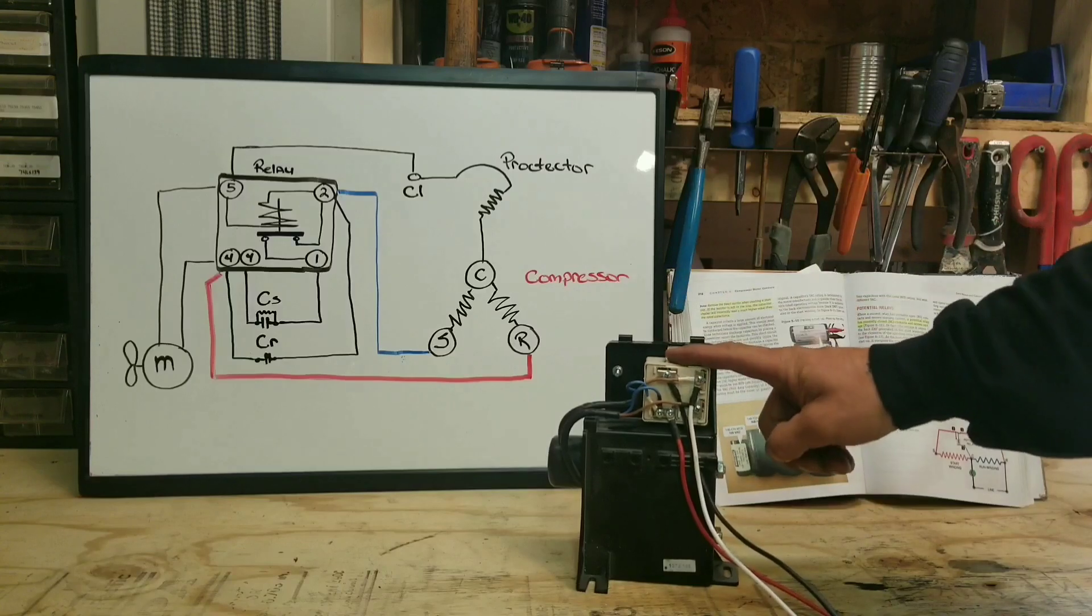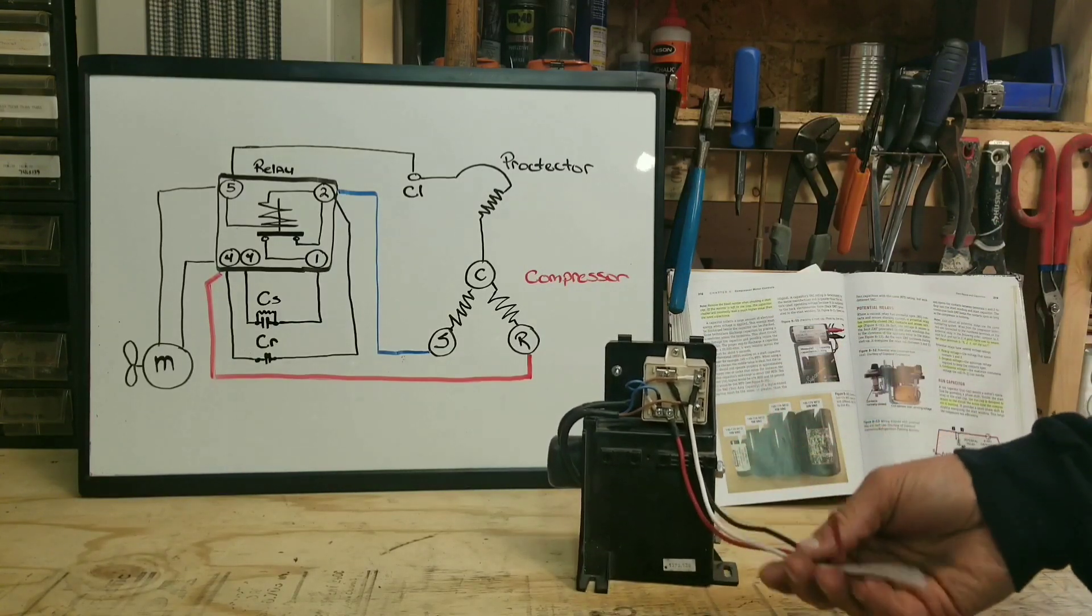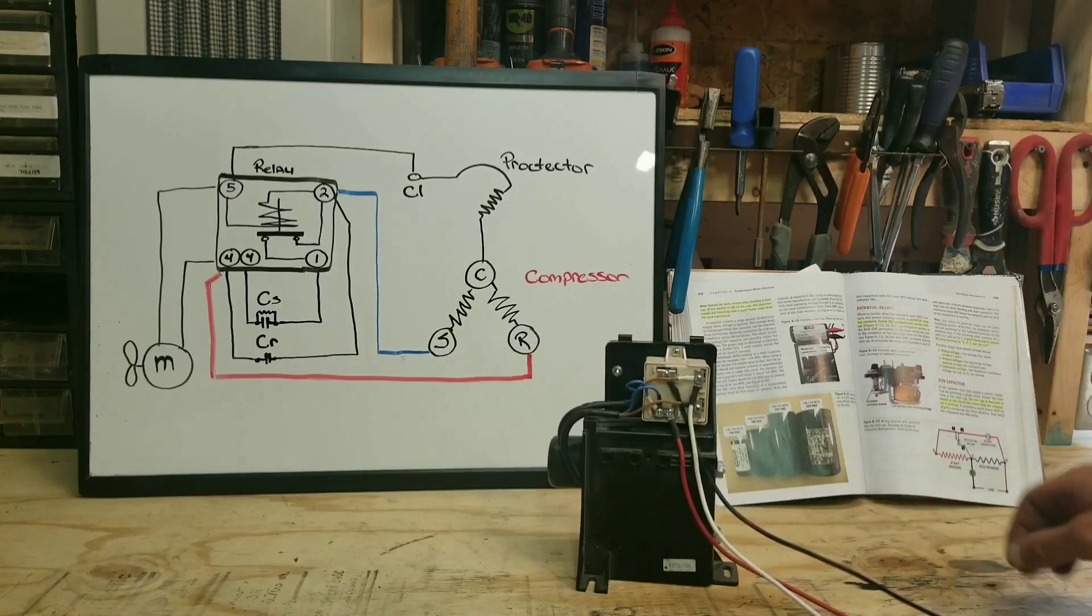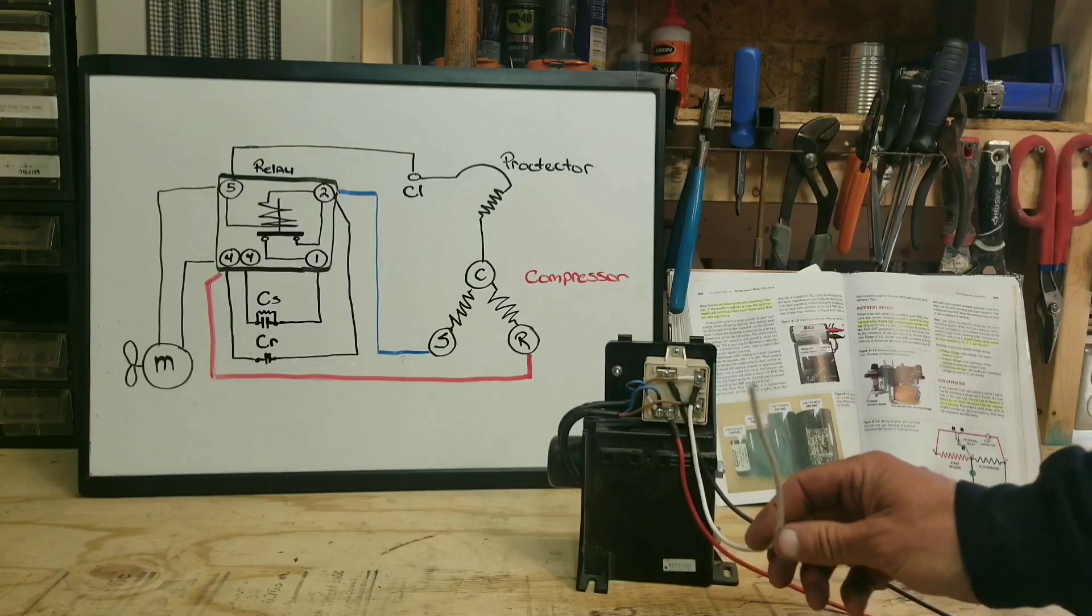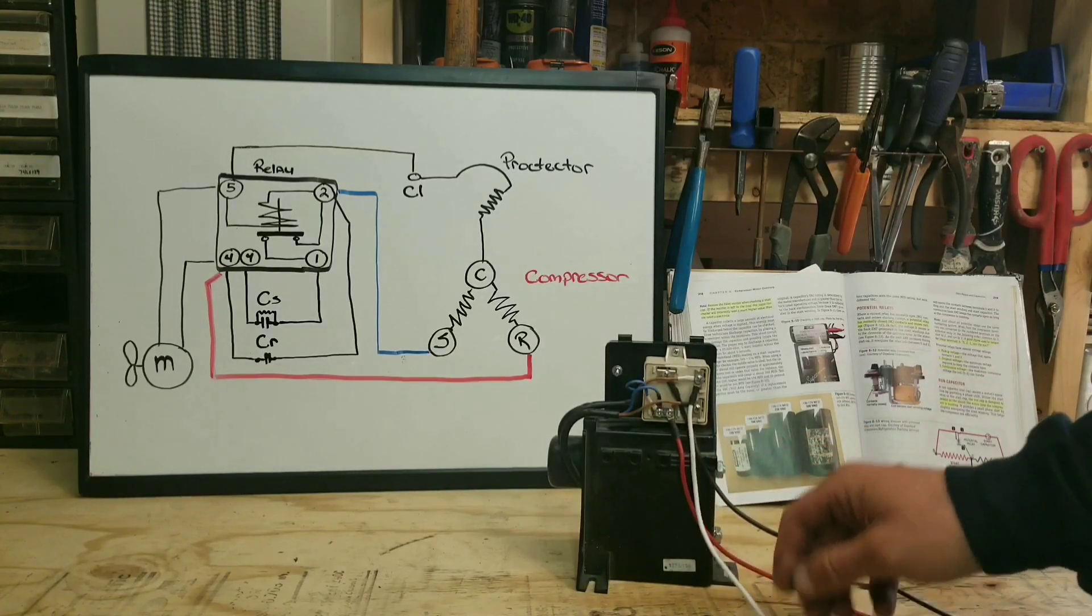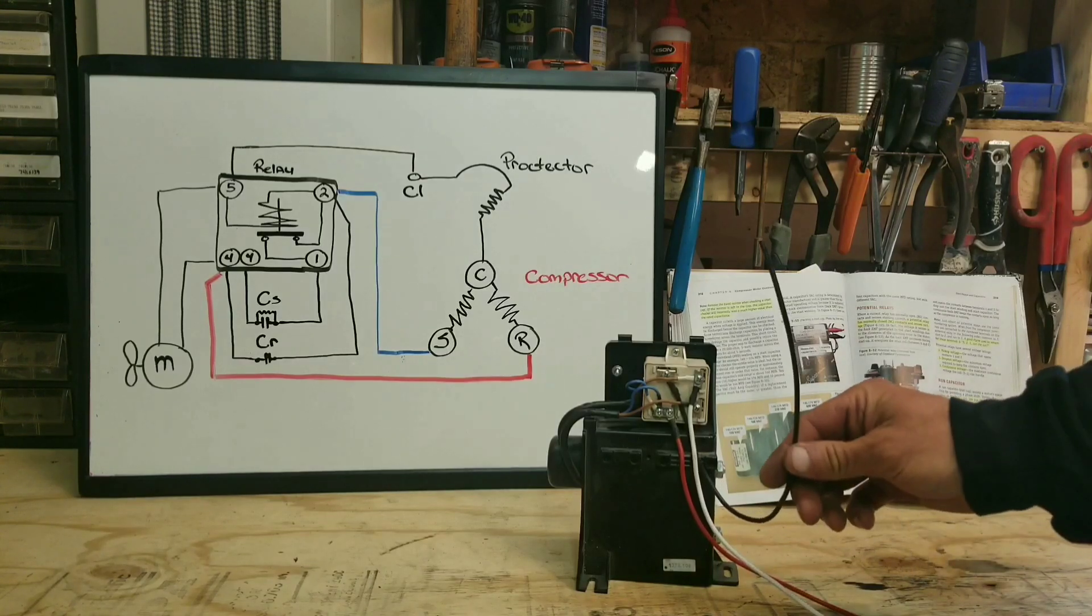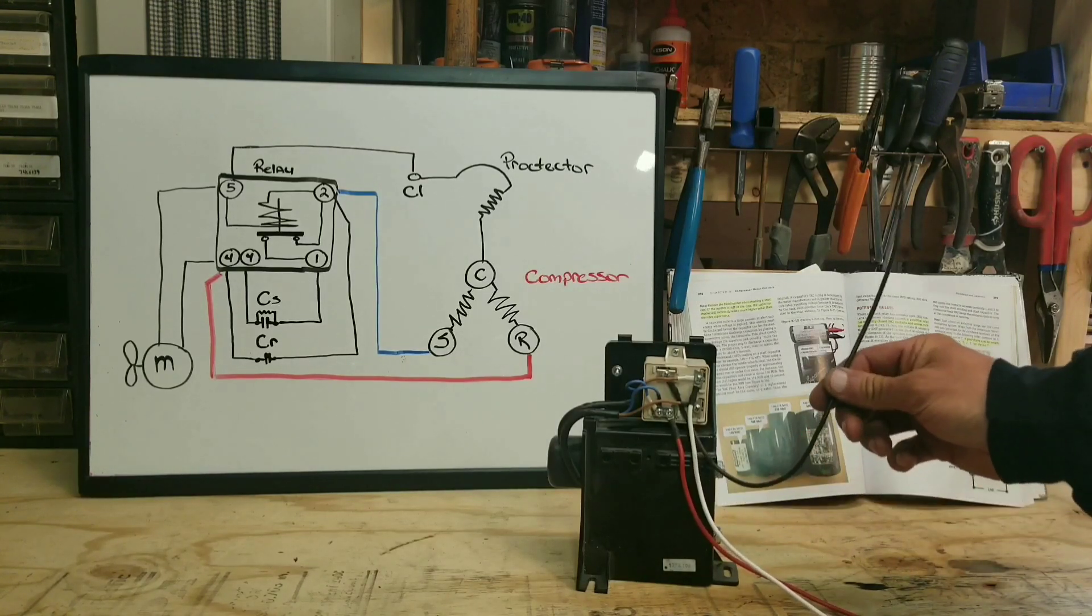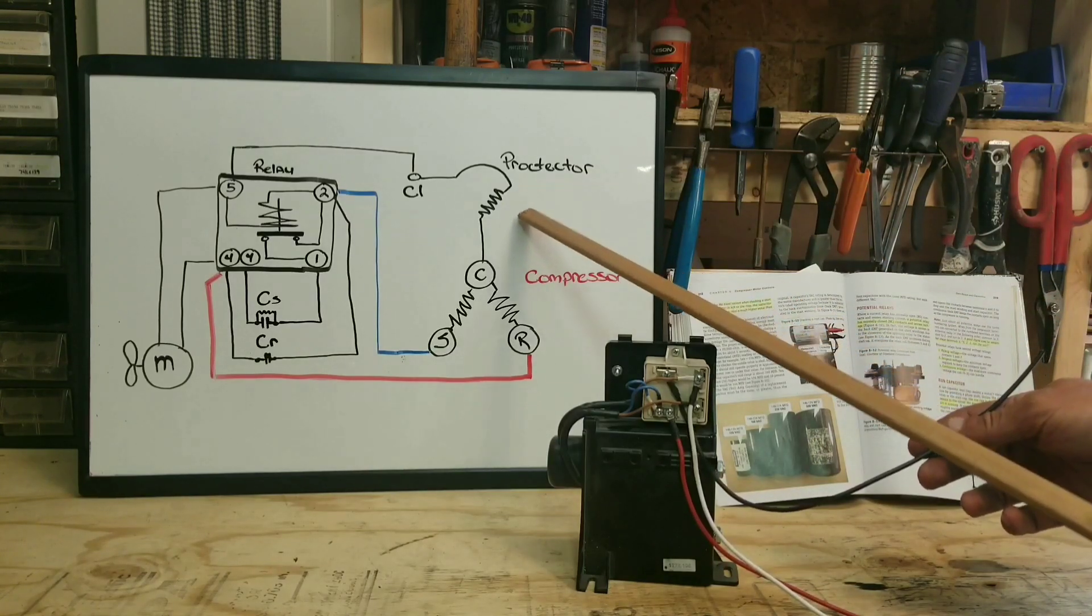So this is our potential relay. Just imagine these wires go to an invisible compressor. Red is our run, white will be our start, which is blue on our schematic because I obviously can't put white on a white board, and then black will be our common. This wire would go to our thermal protector right here.